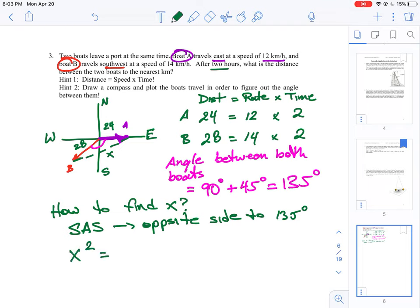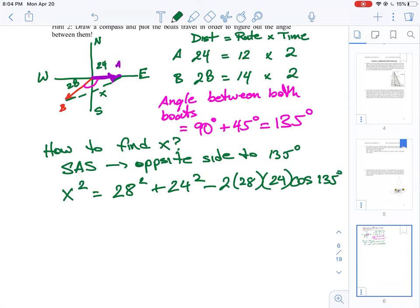That's 28 squared plus 24 squared minus two times the legs. So two times A times B, which is two times 28 times 24 times cosine of 135 degrees. If we plug all that into our calculator and calculate everything out...